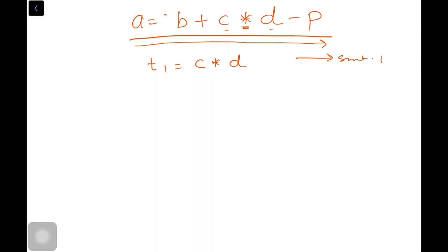Then we have to rewrite our user input as b plus t1 minus p. Now again scan and find out the operator with the highest precedence. The plus and minus have the same precedence, so we will take the left hand side first, left associative. So t2 is equal to b plus t1. So you got a second statement of three address code format.